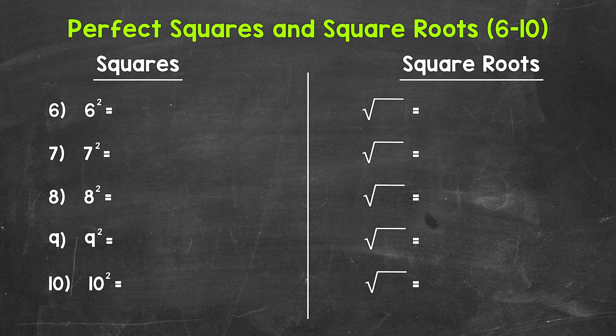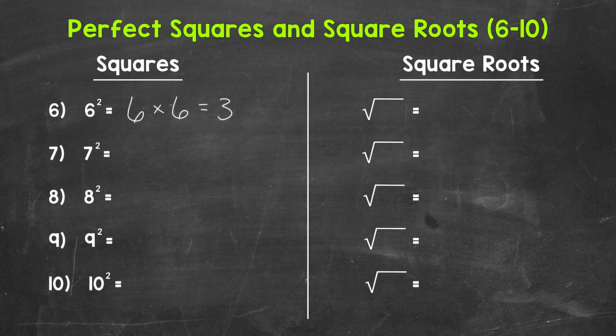Let's jump into the sixth through tenth perfect squares and square roots, starting with number six, where we have six squared. That means six times six, which equals 36. So six squared equals 36, and that means the square root of 36 equals six.